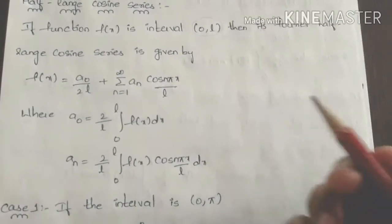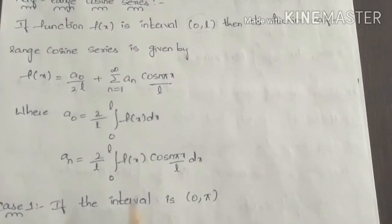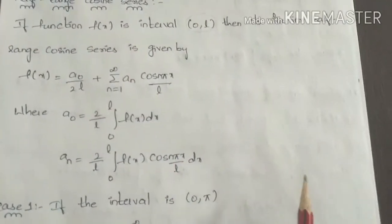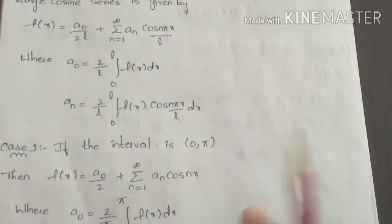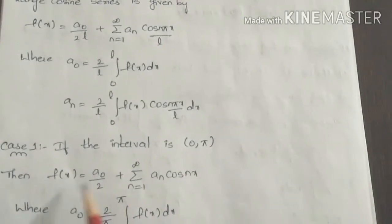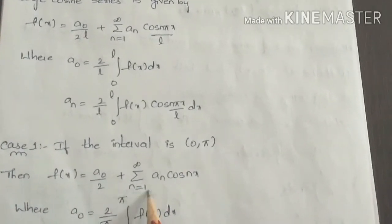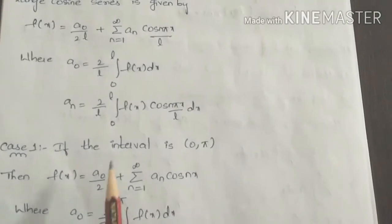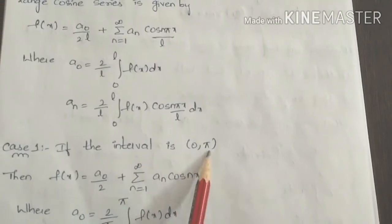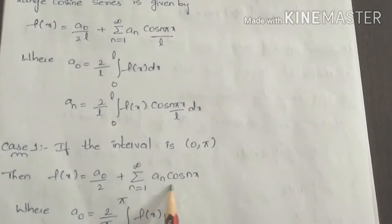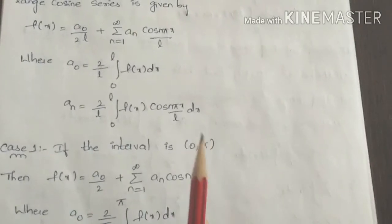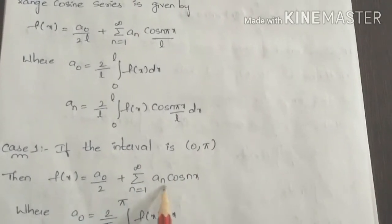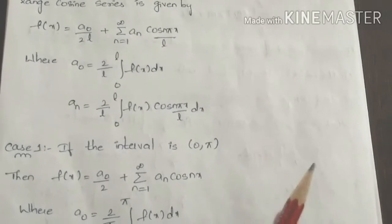Next case: if the interval 0 to l is equal to 0 to pi, then f of x is equal to a0 by 2 plus summation n equals to 1 to infinity, an cos(nx).